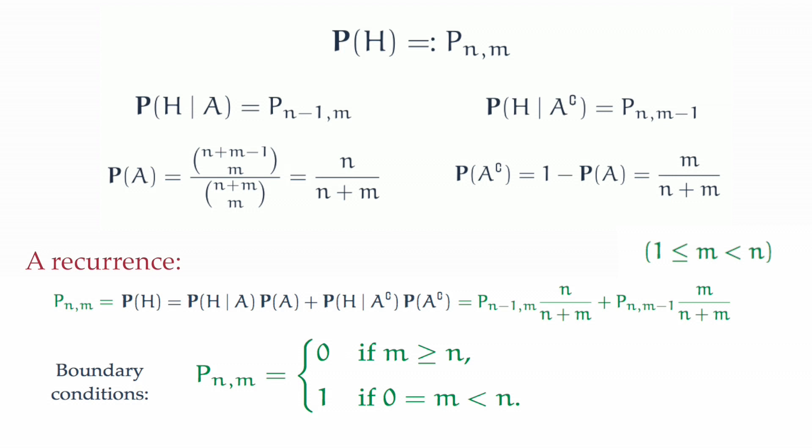Now, together, a recurrence with a range of validity and boundary conditions give us all the tools needed to solve the problem. At this point, we have exhausted all the chance-driven elements for the problem. We are now left with a calculus problem, a question of solving for a double index sequence satisfying a certain recursive definition with certain boundary conditions.